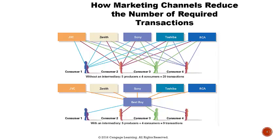Another example: think of a department store. Say there are four consumers who want to purchase pairs of jeans, and there are four denim manufacturers — Lucky, Seven, Levi's, Citizens for Humanity, Diesel. Without any intermediary, these four consumers would make contact with each of these four producers, creating a total of 16 contacts. But if there was an intermediary — using Belk as an example — then those same four buyers and four producers could all use Belk, and we would only have eight contacts. By minimizing the transactions, the process is very efficient and the concept of economies of scale is being utilized.